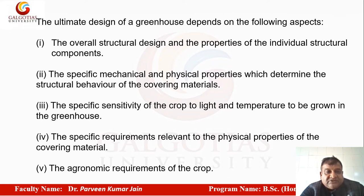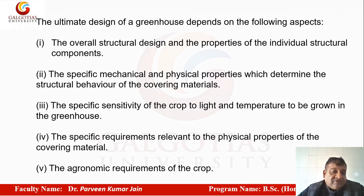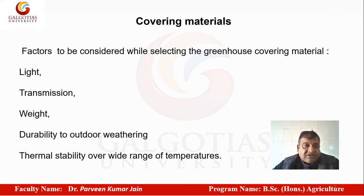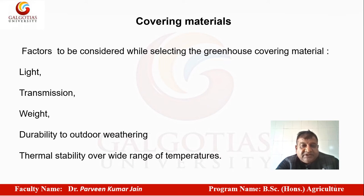If we need high temperatures we put certain equipment accordingly; if we want cooling we need cooling arrangements. The specific crop planned for the polyhouse also depends on crop physiology and economics. The factors to consider while selecting a greenhouse covering material are light transmittance, weight, durability to outdoor weathering, and thermal stability over a wide range of temperatures. The poly sheet generally recommended is the 3A sheet — anti-drip, anti-UV, and anti-dust. There are also different colored nets and sheets available such as pink, red, yellow, and green.